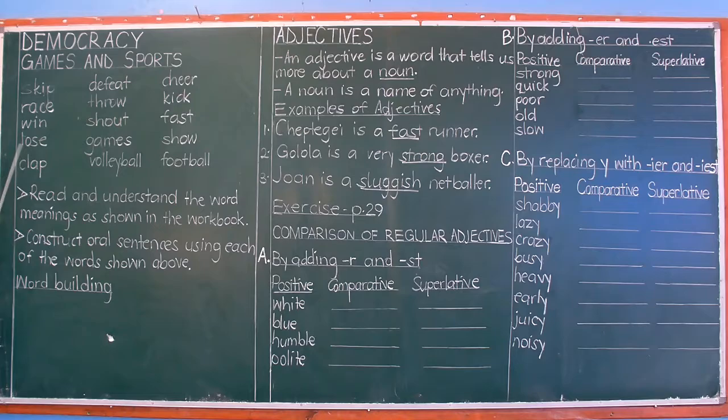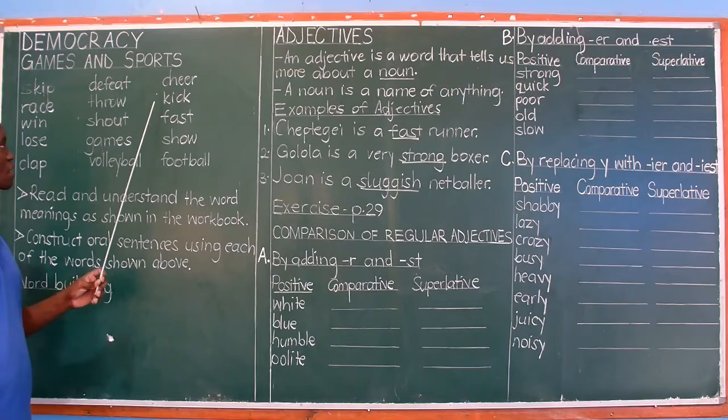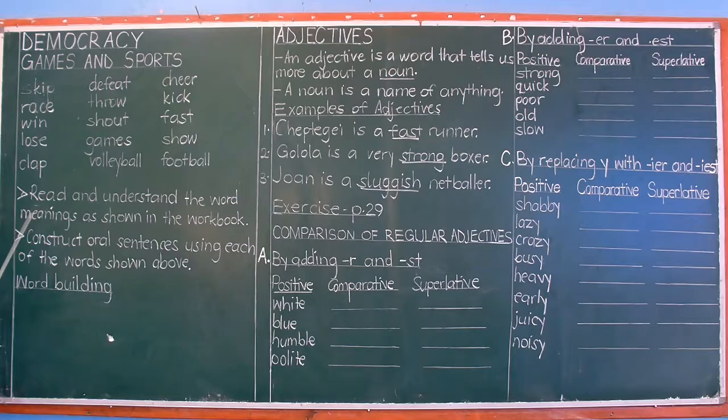Let's go through the list once more before we go to other things. Democracy is the topic and the subtopic is games and sports. Skip, race, win, lose, clap, defeat or defeat, throw, shout, games, volleyball, cheer, kick, fast, show, and football. We are telling you to read and understand the word meanings as shown in the workbook.